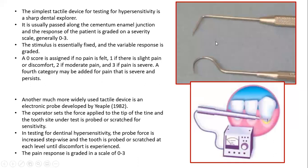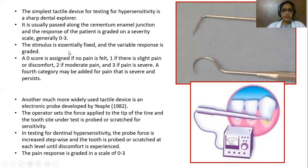For tactile assessment, the simplest tactile device is a sharp dental explorer, usually passed along the cemento-enamel junction. The patient's response is graded on a severity scale of 0 to 3: 0 if no pain is felt, 1 for slight pain or discomfort, 2 for moderate pain, and 3 for severe pain. A fourth category may be added for pain that is severe and persists.